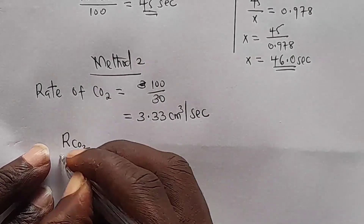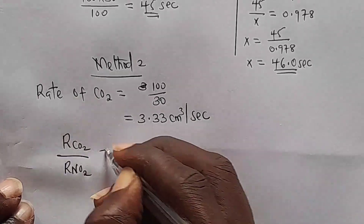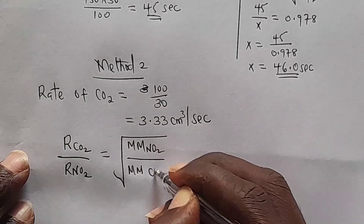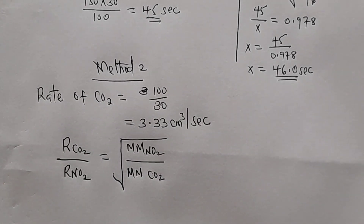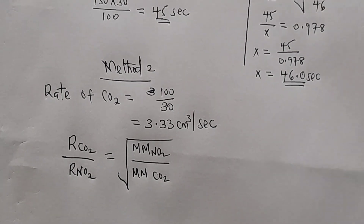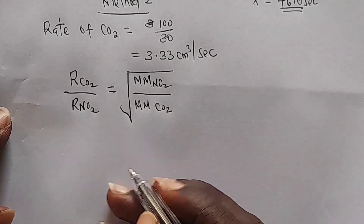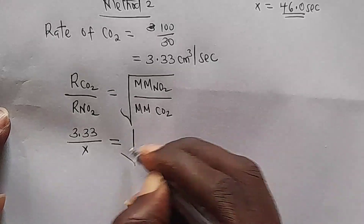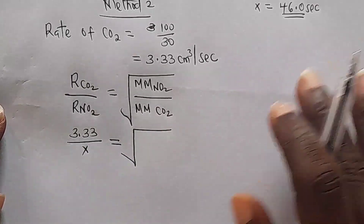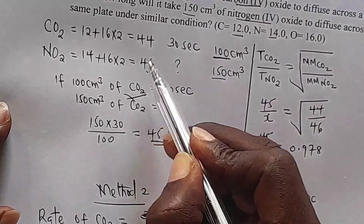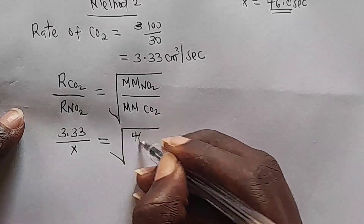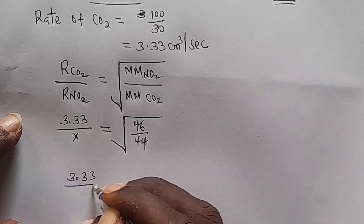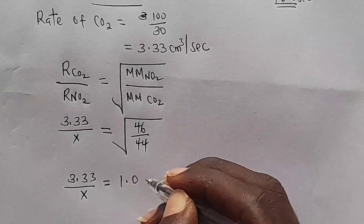The formula is: rate of CO₂ over rate of NO₂ equals the square root of the molecular mass of NO₂ divided by the molecular mass of CO₂. Remember, rate is inversely proportional to the square root of molecular mass. Substituting: 3.33 divided by x equals the square root of 46 over 44, which gives 1.0225.